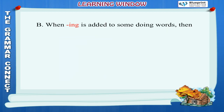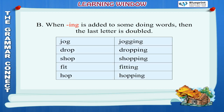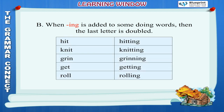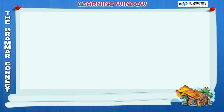Rule B: When ING is added to some doing words, the last letter is doubled. Examples: Jog→Jogging, Drop→Dropping, Shop→Shopping, Fit→Fitting, Hop→Hopping, Hit→Hitting, Knit→Knitting, Grin→Grinning, Get→Getting, Roll→Rolling.